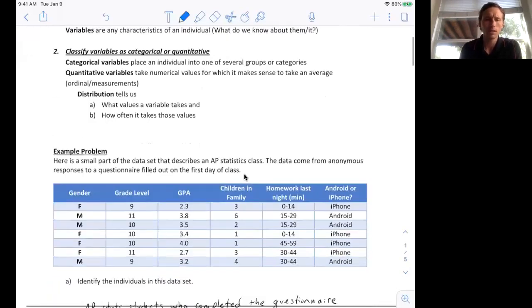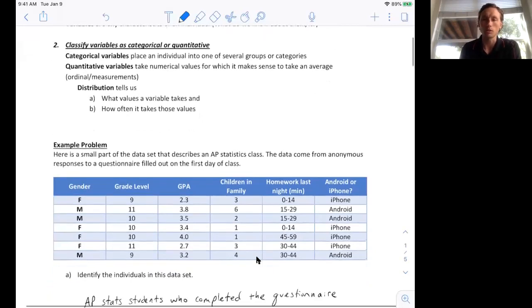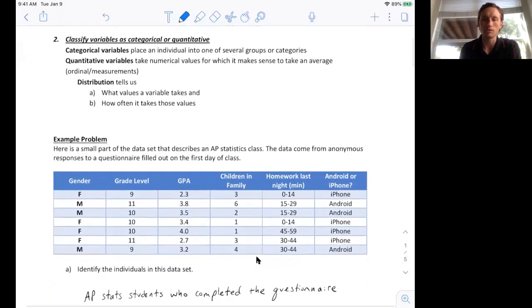So here is a data set from an AP stats class. The data come from anonymous responses to a questionnaire filled out on the first day of class. So the first question is, identify the individuals. Who is being described in this data set? The AP students who responded to the questionnaire. Those are the individuals.